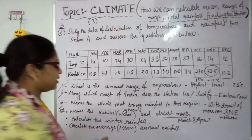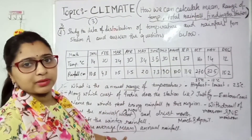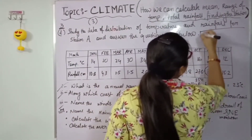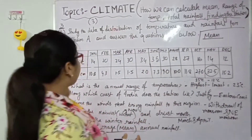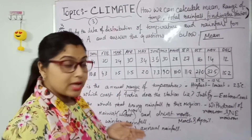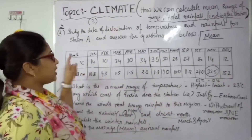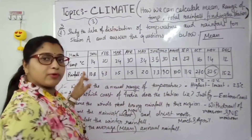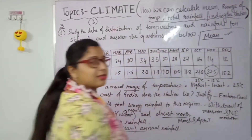Question number 3: calculate the average or mean temperature. The term 'mean' or 'average' can be used — both mean the same thing. If the question asks for mean temperature, add the temperatures for all 12 months and divide by 12. If it asks for mean rainfall, add the rainfall for all 12 months and divide by 12. You will easily get the mean or average temperature or rainfall.